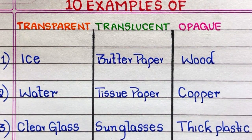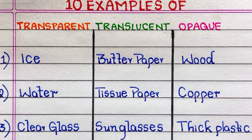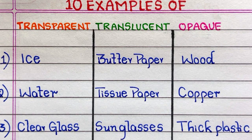First example of an opaque object is wood, second copper, third thick plastic.